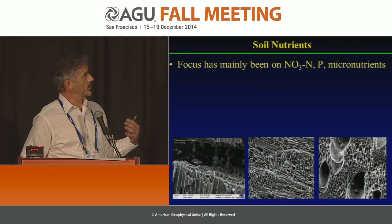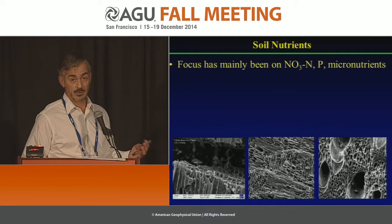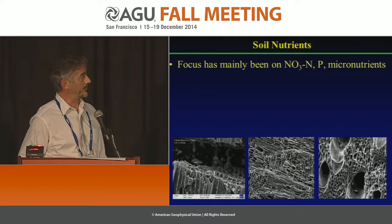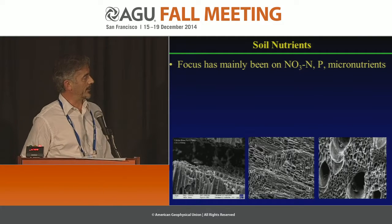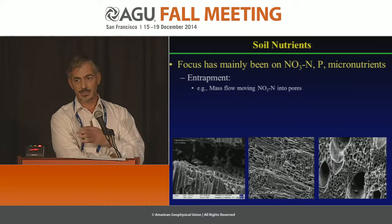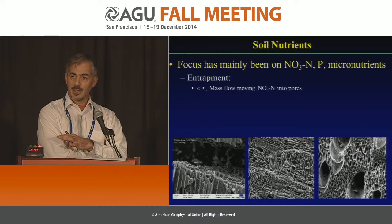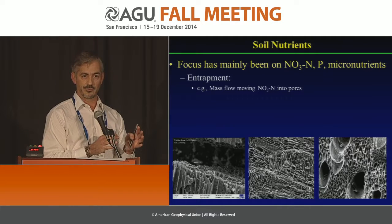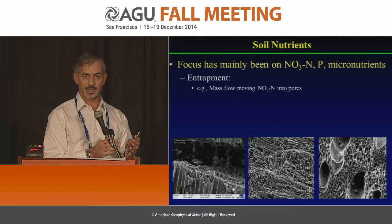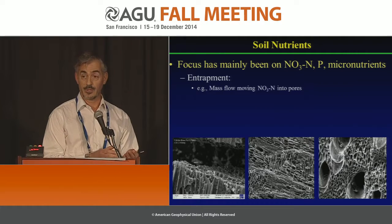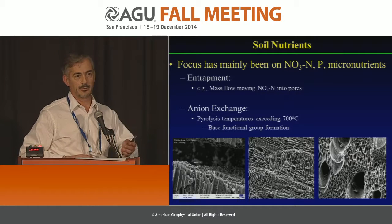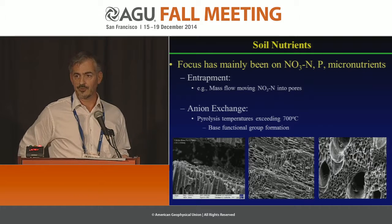Switching gears a little bit, some of the work we've done in the ARS has focused on soil nutrients like nitrate nitrogen, but also phosphorus as well as micronutrients. When we talk about nitrogen, some concepts have been geared towards entrapment — mass flow of water moving into pores of biochar particles carries nitrate nitrogen that can be entrapped and later utilized by a crop. That's one concept.